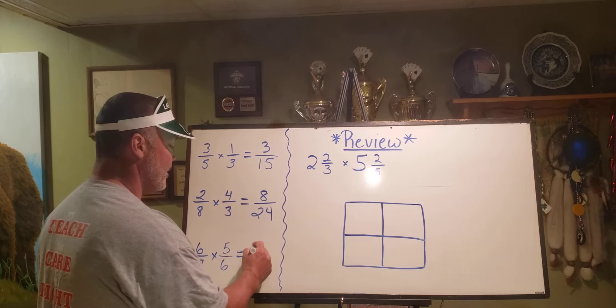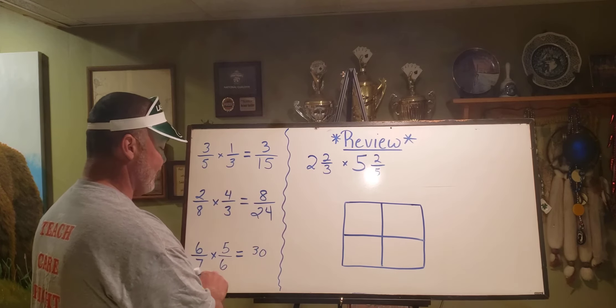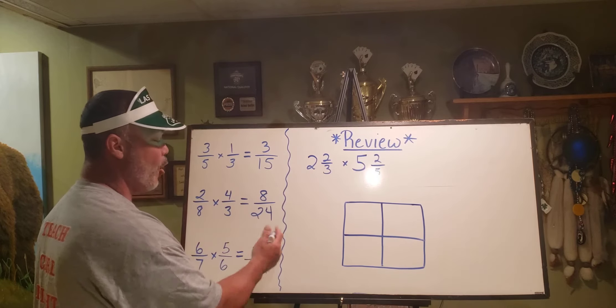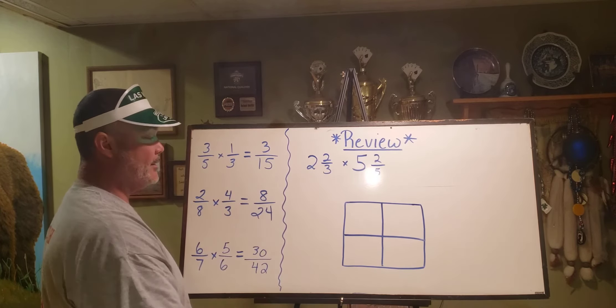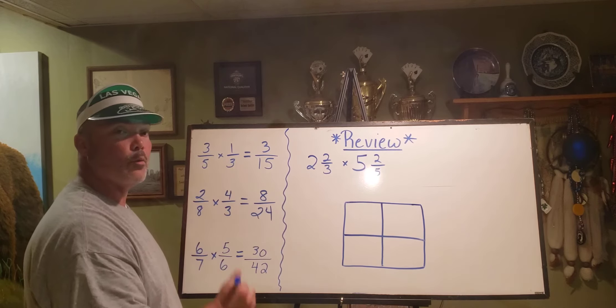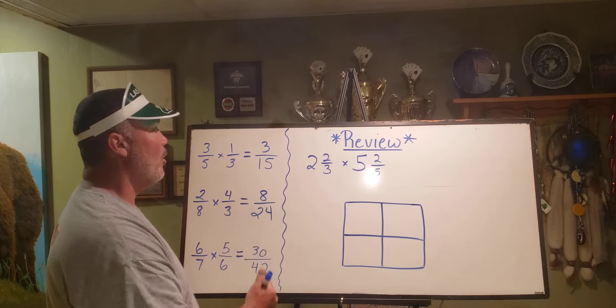Six times five, thirty. Seven times six, forty-two. Thirty over forty-two, or thirty forty-seconds, depending on how you want to say it. Multiplying across when just multiplying fractions is all you need to do.